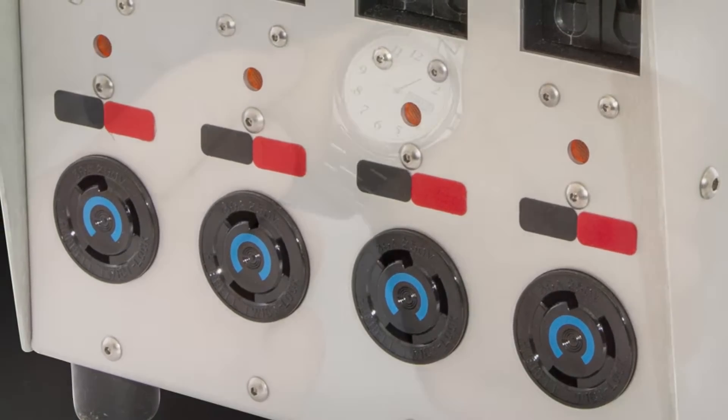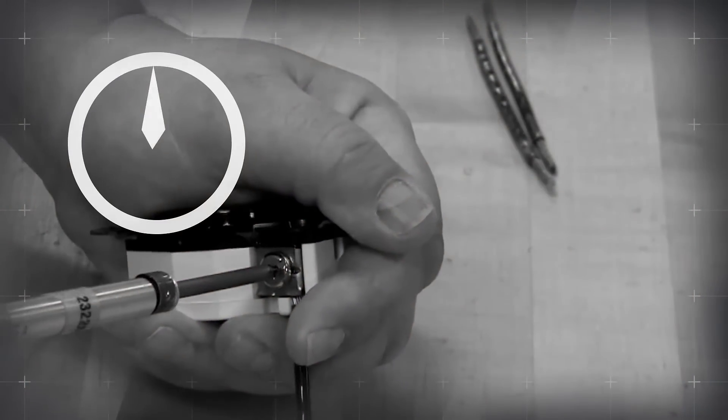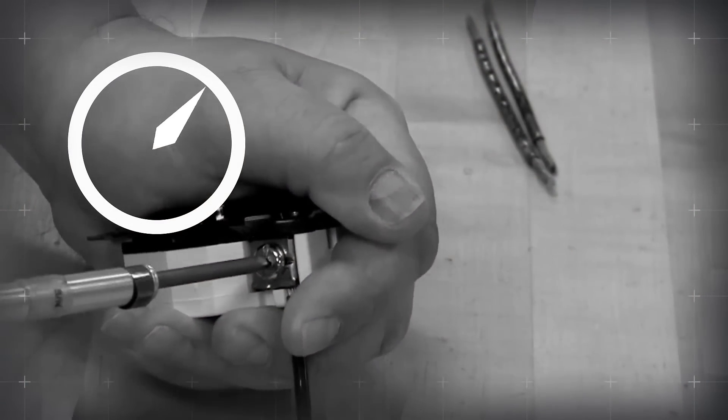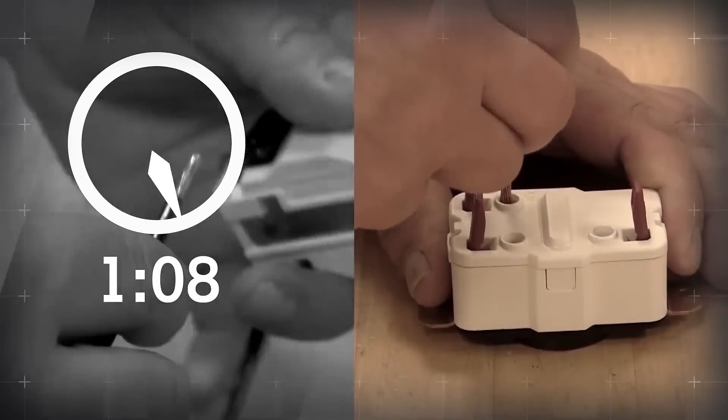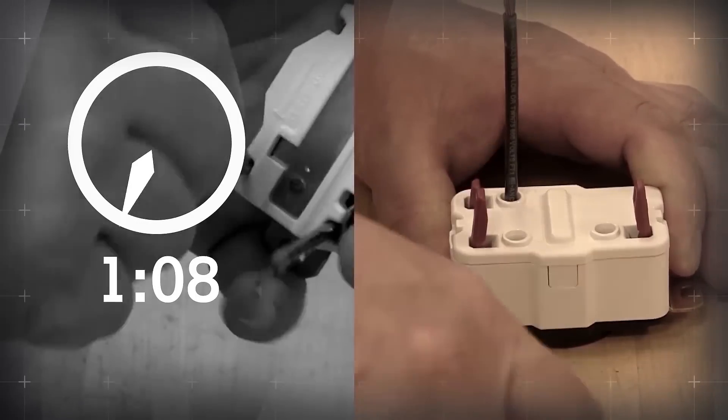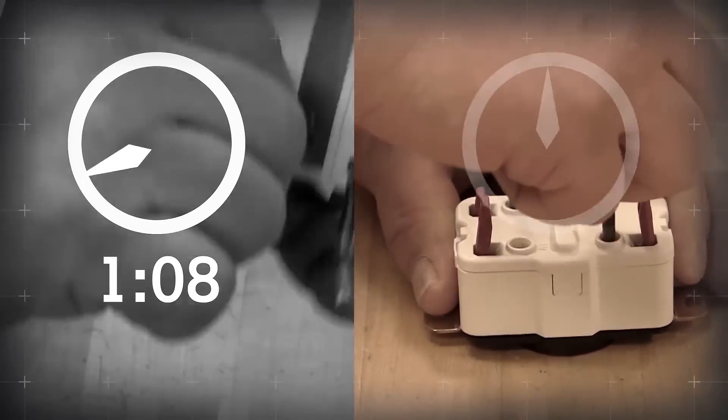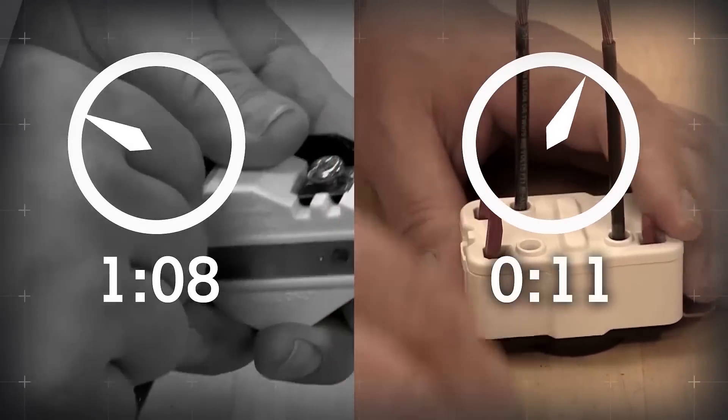Just how much time can you save? Studies show that the average time required by a professional installer to complete a screw termination is one minute and eight seconds. With the Hubble Twistlock Spring Termination System, a professional installer can complete the process in as little as 11 seconds.